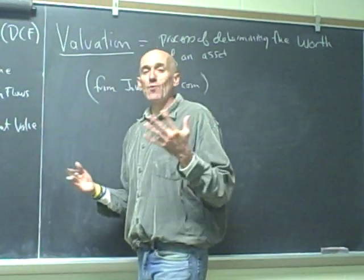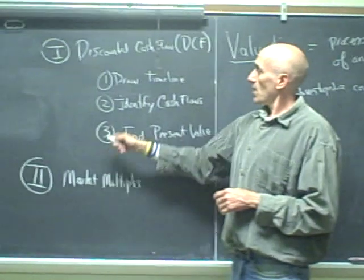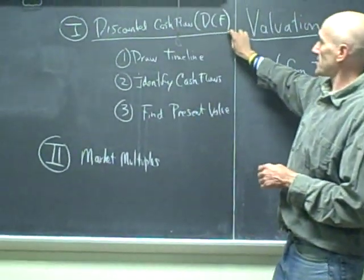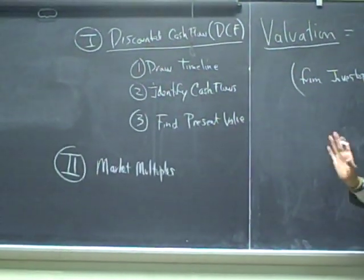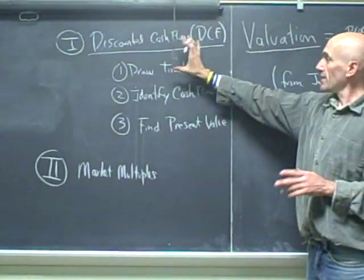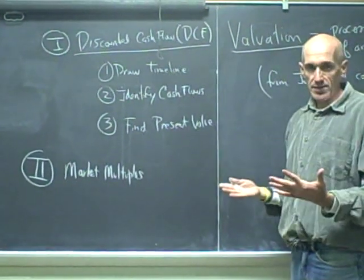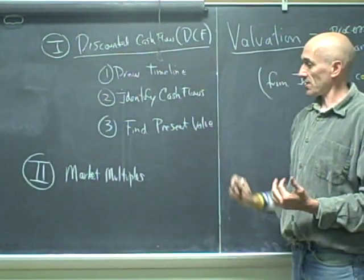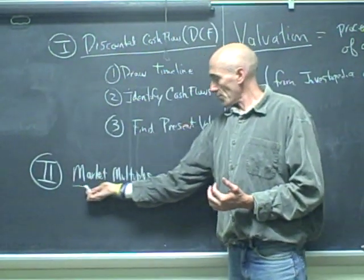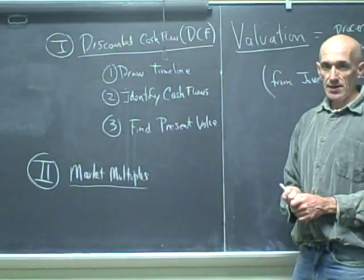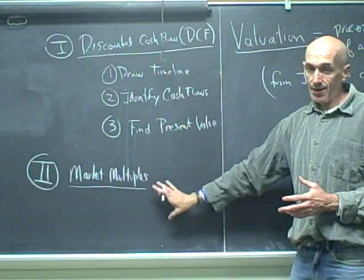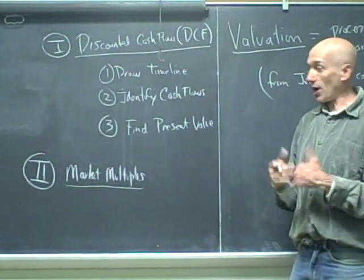There's two main ways that we do this in finance. Number one is called discounted cash flow analysis. It is much more rigorous. It is the theoretically correct way to do things, but it's pretty challenging sometimes. The second way we do things is market multiples. It's a lot faster, a lot easier, but it's not quite always as accurate.